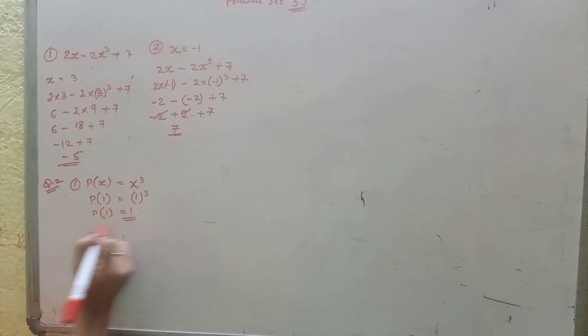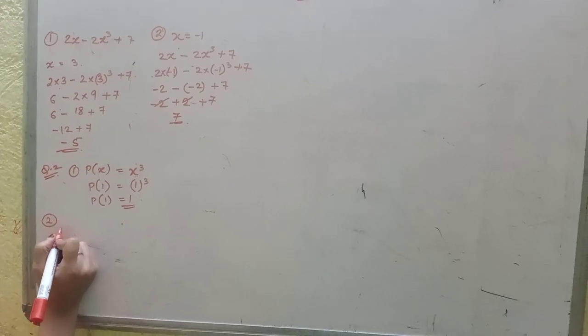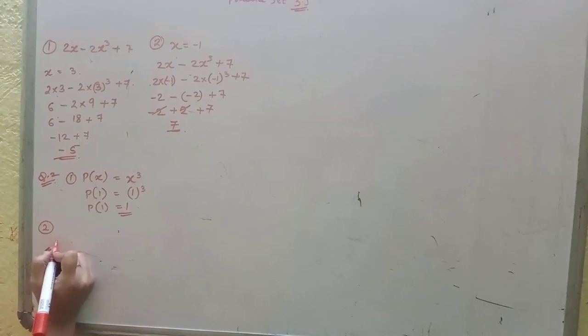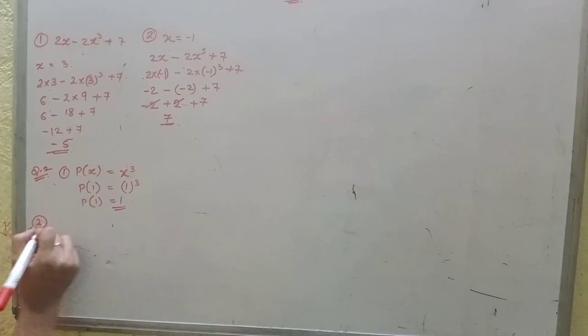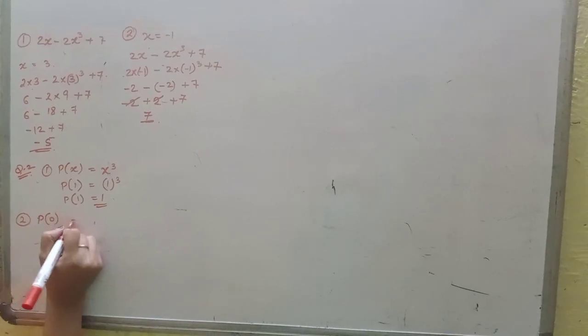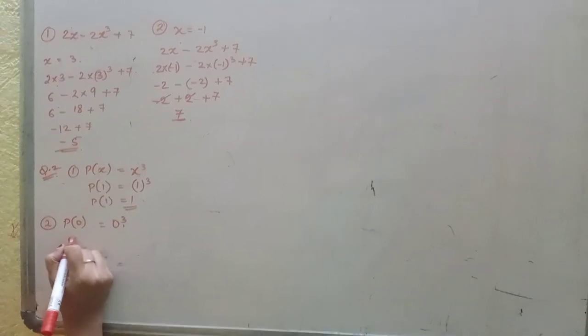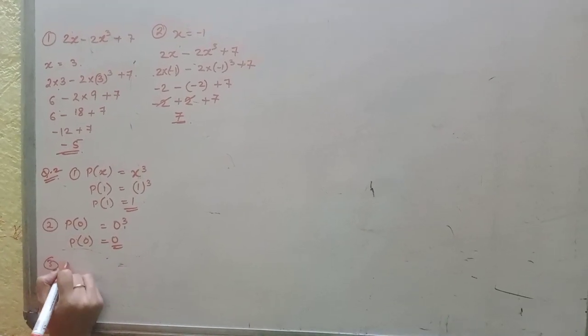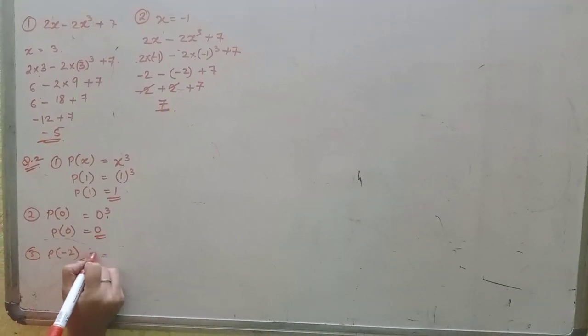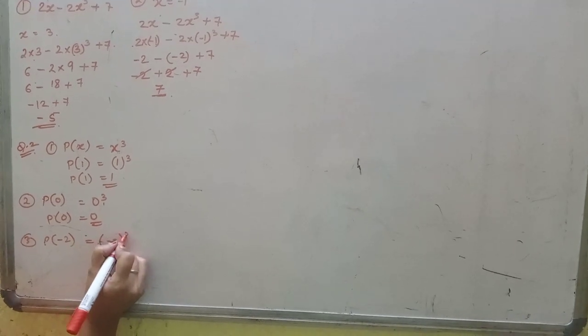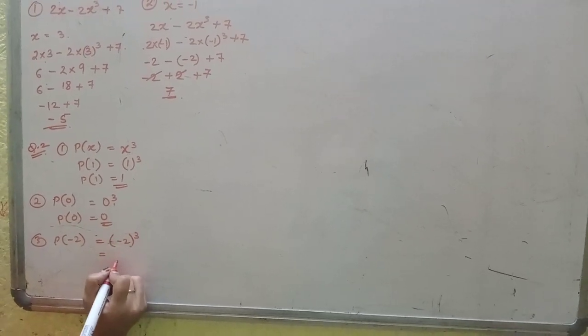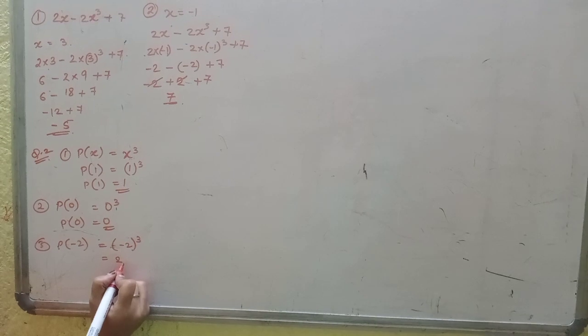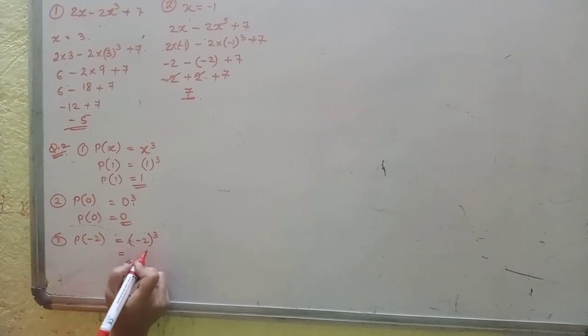Similarly, P(0) = 0³ = 0 only. Third one: P(-2) = (-2)³. 2 to the power 4 is 4, 4 to the power 8 is -8. So P(-2) is -8.